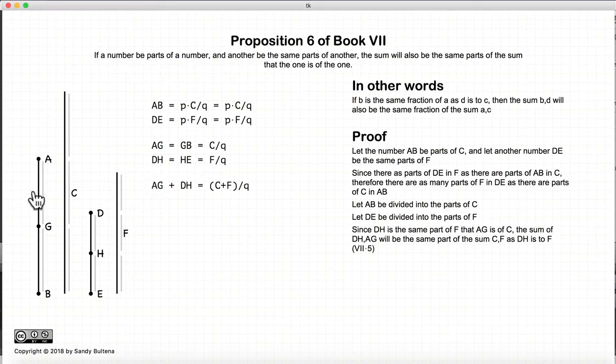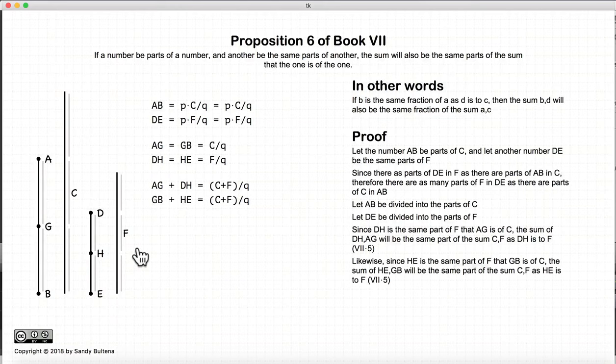Now if we add ag plus dh, well, it's going to be equal to the sum of the parts from c and f. And as we know from the previous proposition, that if ag is a part of c and dh is a part of f, if we add them together, they will be the same part of c plus f. So this comes from the proposition just in the previous video. So ag plus dh, in other words, this part plus this part, is the same fraction, 1 over q, of c plus f.